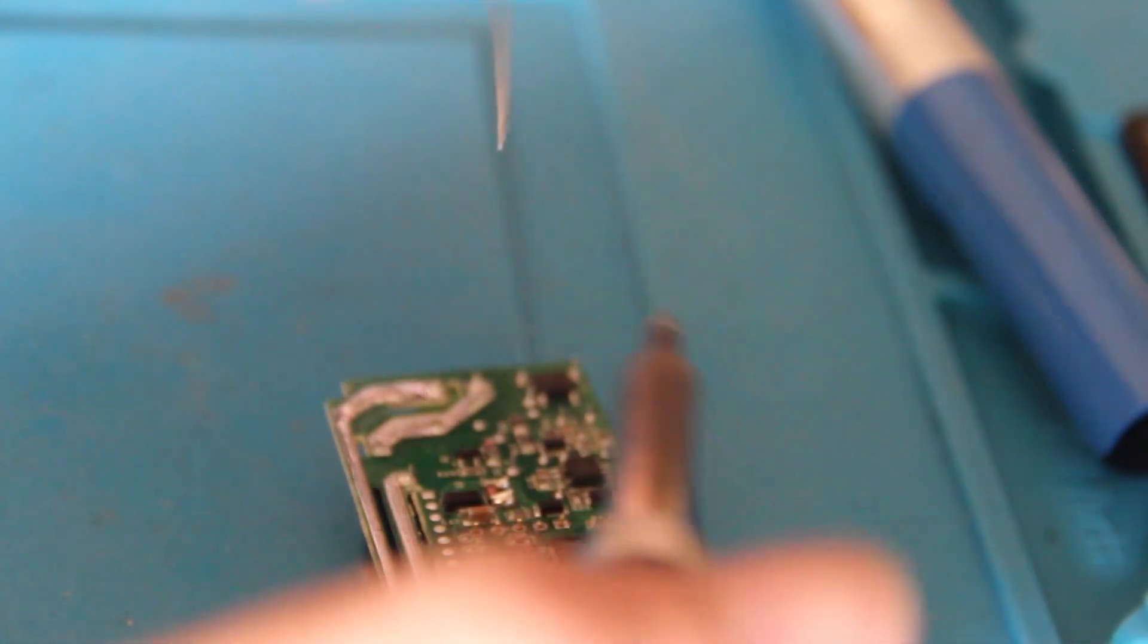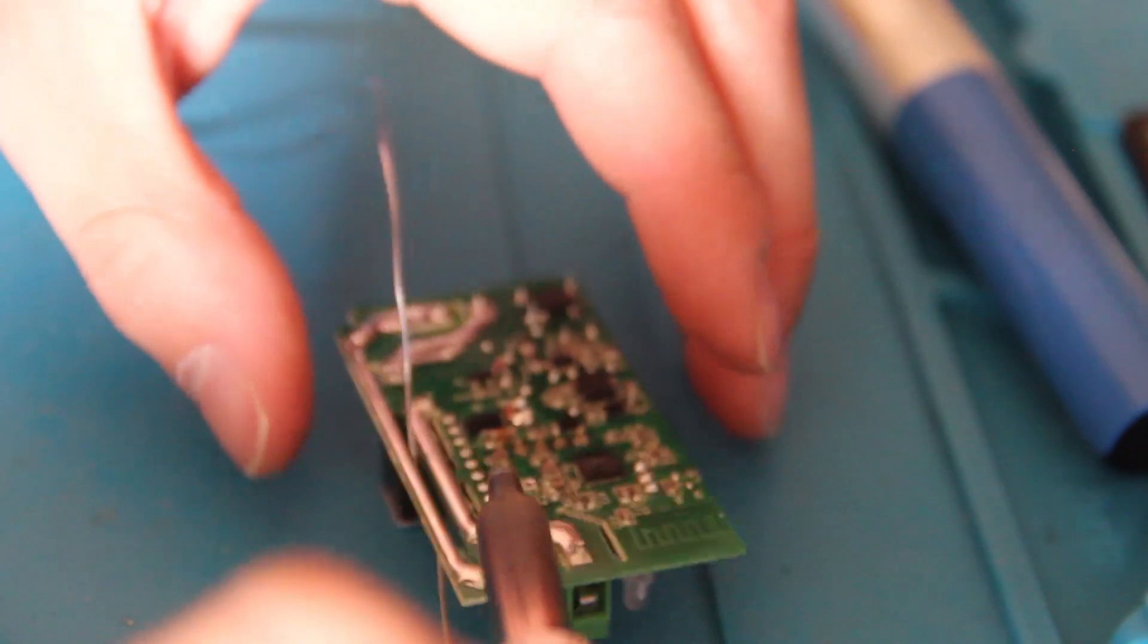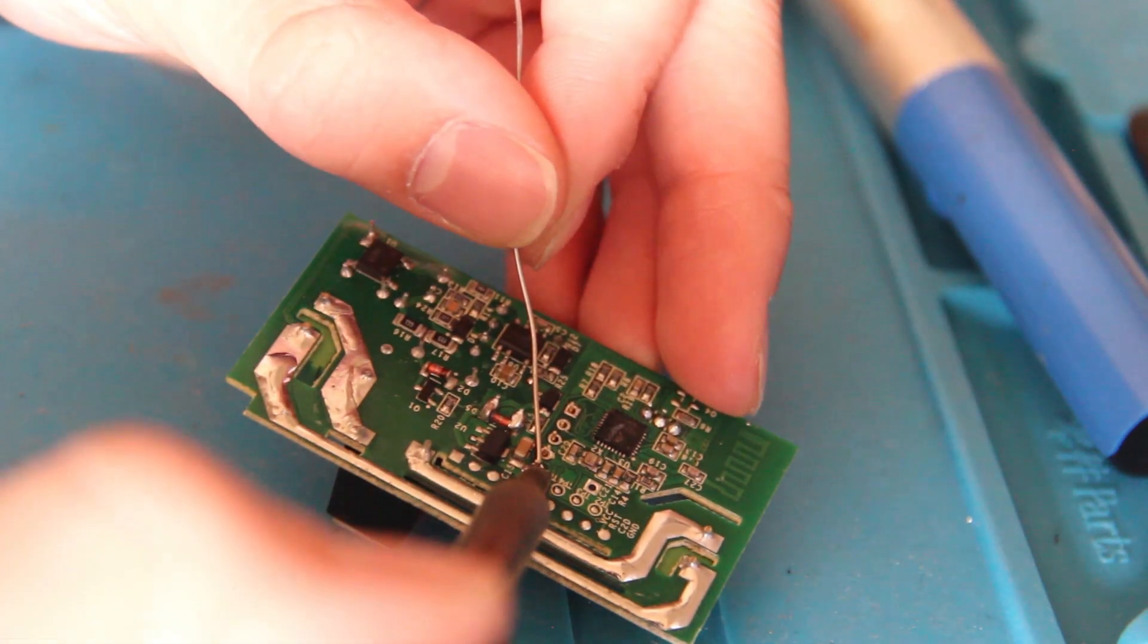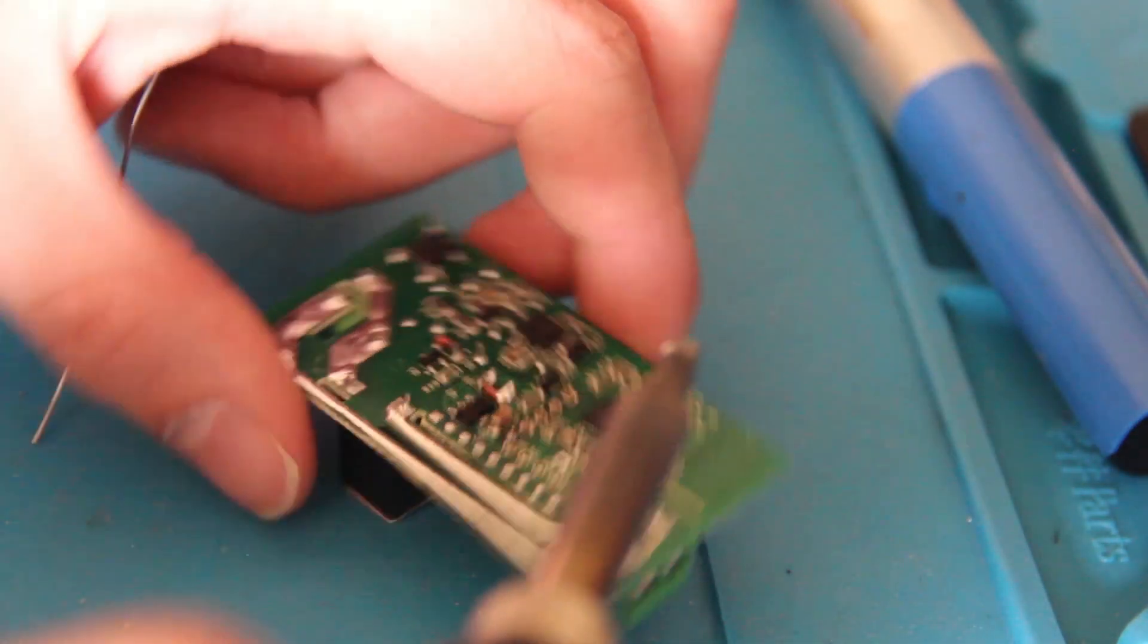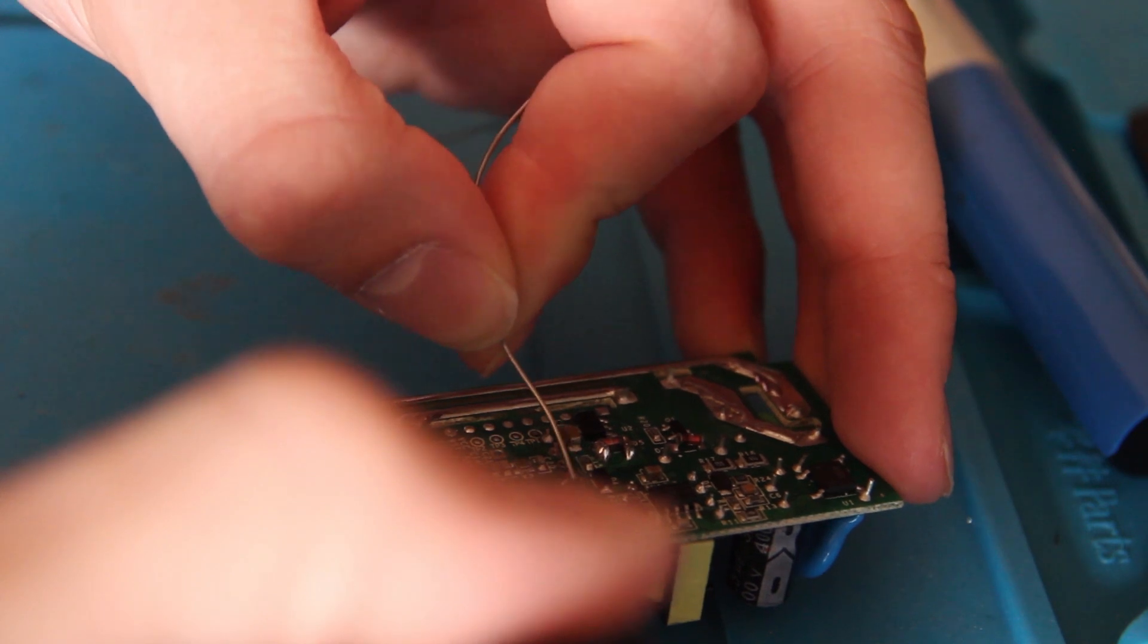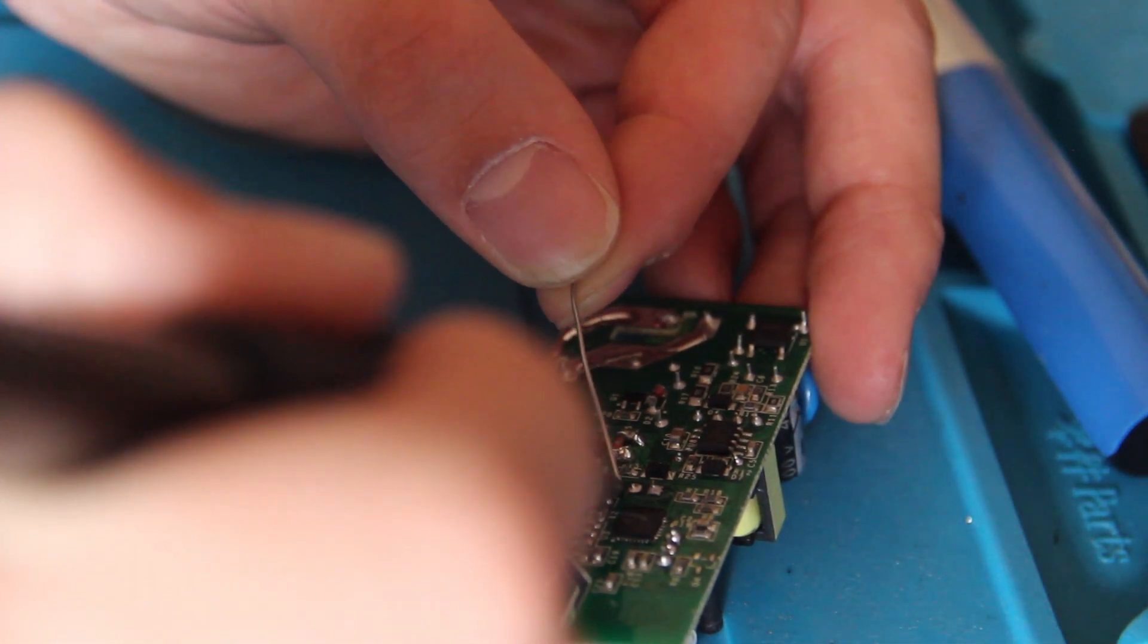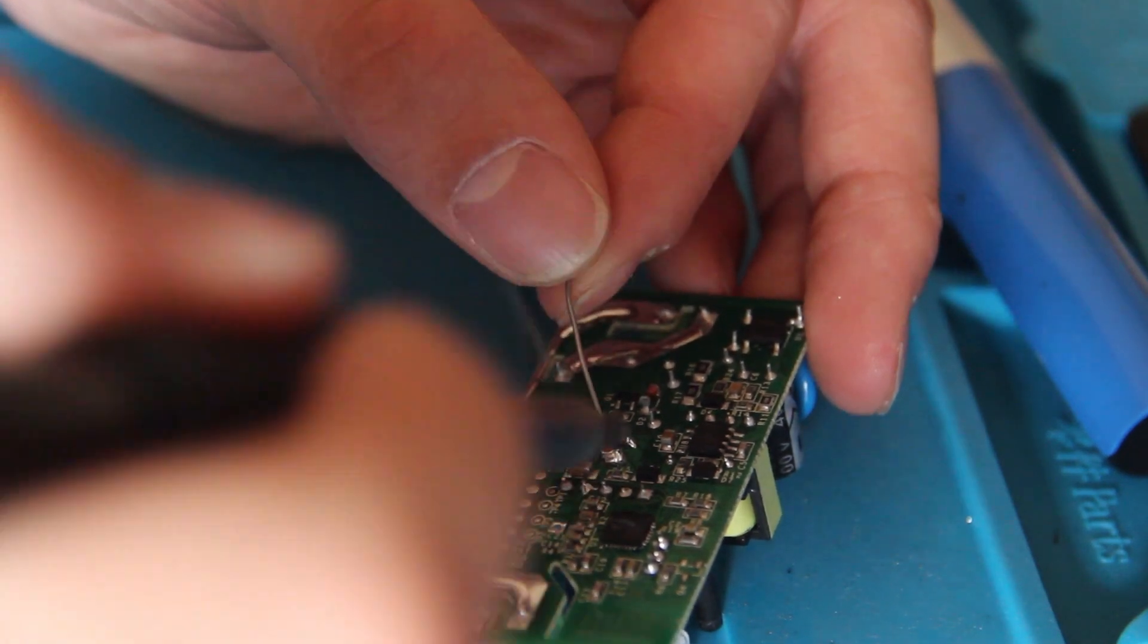The nice thing is my soldering iron has already warmed up. Just give a tiny bit of solder on there, and now we can move the board around. Do this one as well, and this one, and then this one, and then this one like that.